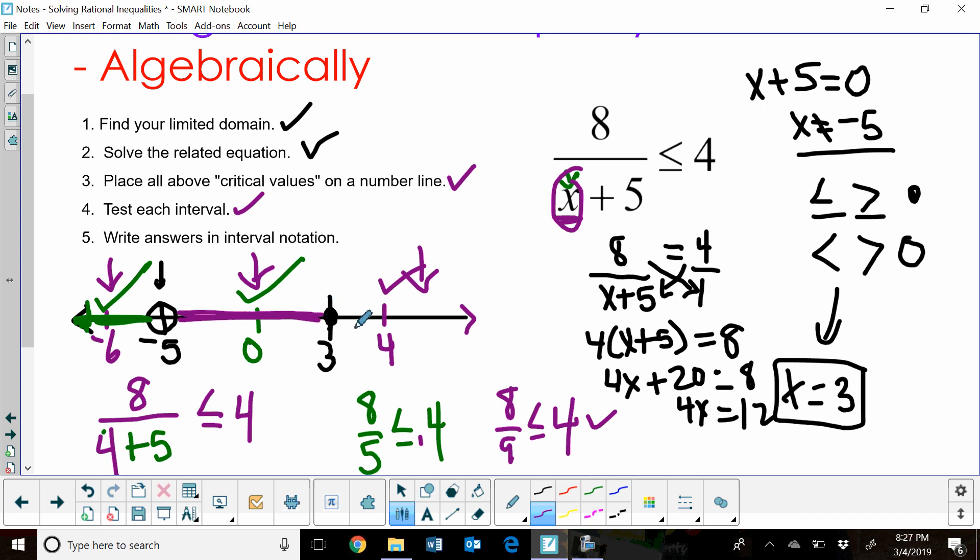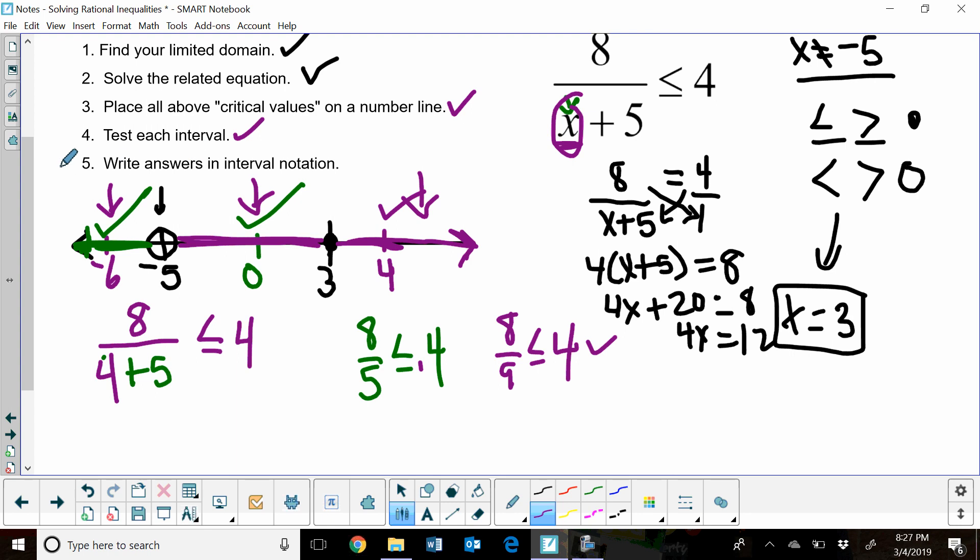So what we've got is a shaded region between negative 5 and positive 3, and then from 3 off to the right to infinity. So now let's look at what we've got. That is actually every value on the x-axis except negative 5. So when I write this, I'm going to write my answer in interval notation.